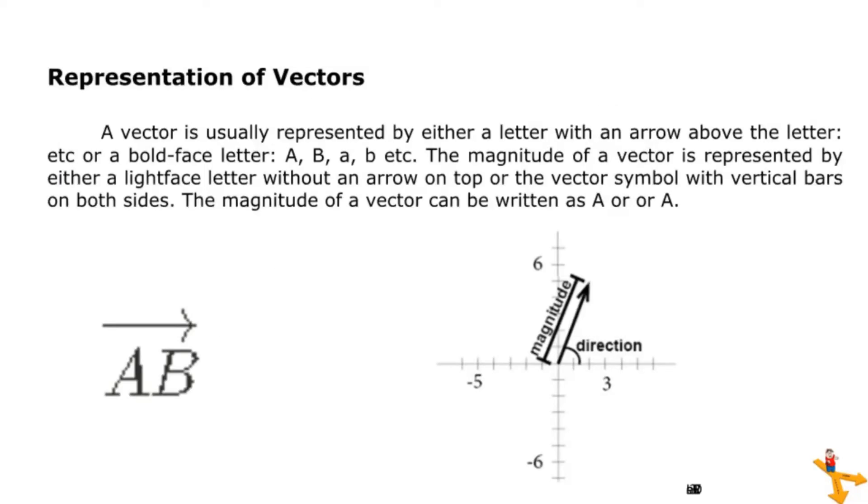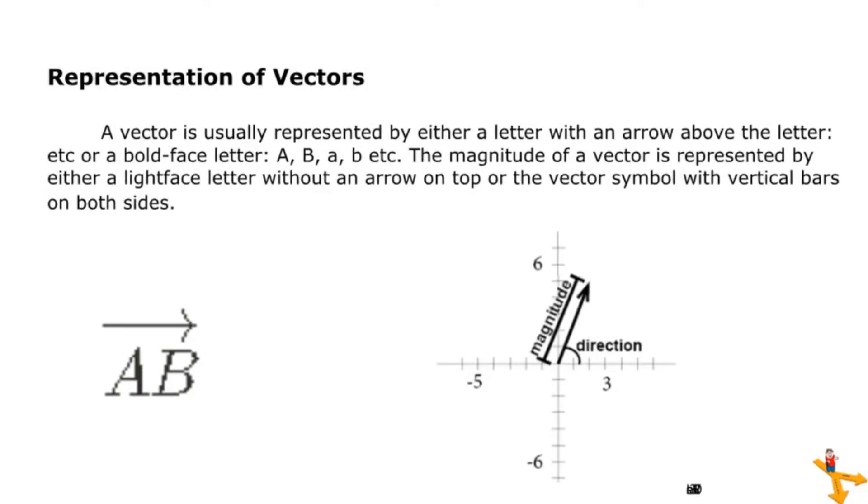Representation of vectors. A vector is usually represented by either a letter with an arrow above the letter or a boldface letter. The magnitude of a vector is represented by either a lightface letter without an arrow on top or the vector symbol with vertical bars on both sides.